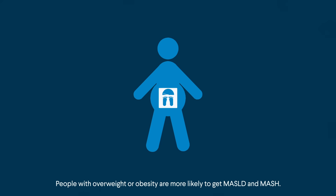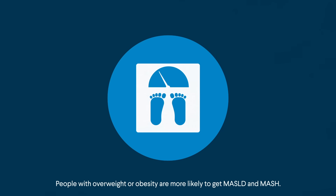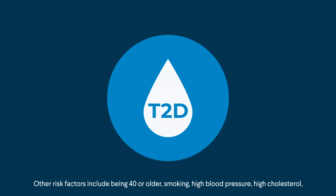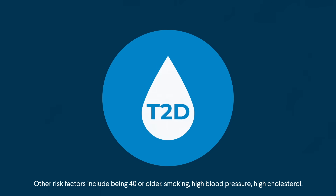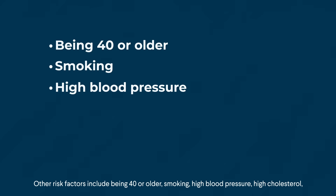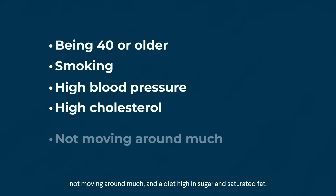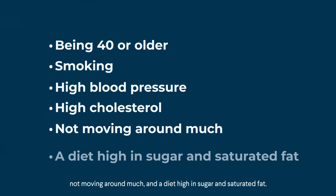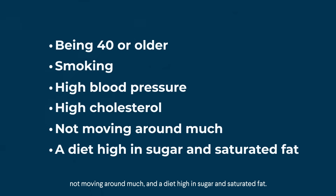People with overweight or obesity are more likely to get MASLD and MASH. The risk is even higher in people with type 2 diabetes. Other risk factors include being 40 or older, smoking, high blood pressure, high cholesterol, not moving around much, and a diet high in sugar and saturated fat.